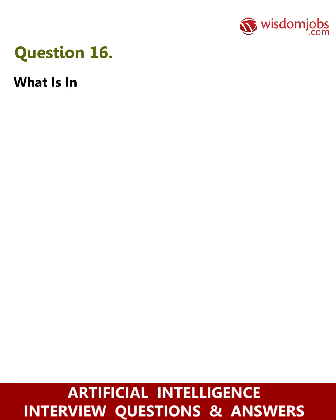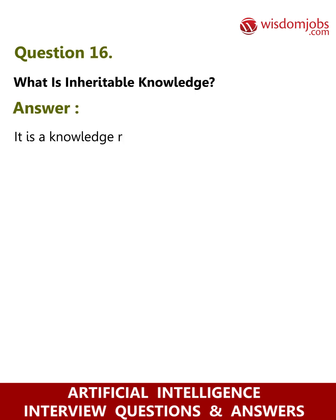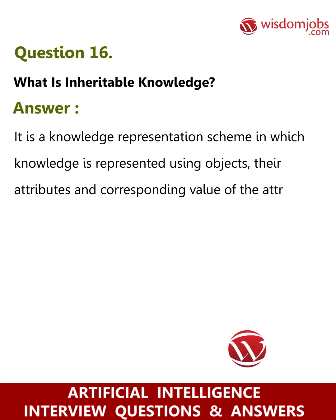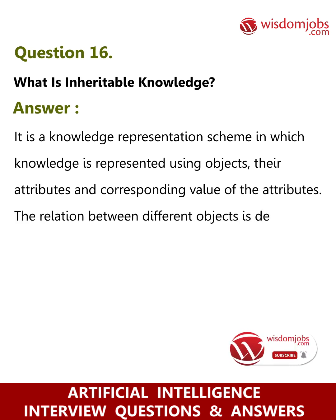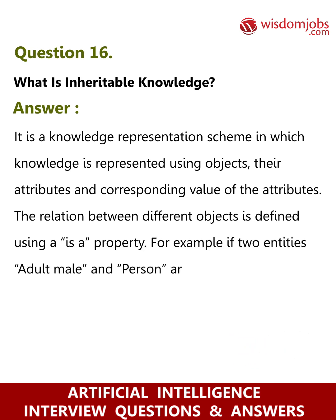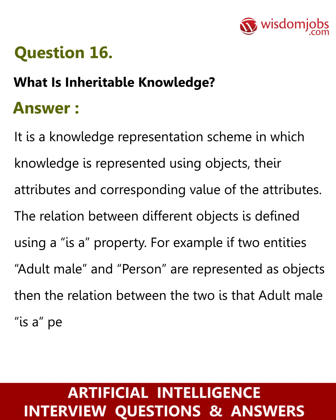Question 16: What is inheritable knowledge? Answer: It is a knowledge representation scheme in which knowledge is represented using objects, their attributes and corresponding value of the attributes. The relation between different objects is defined using an 'is a' property. For example, if two entities, adult male and person, are represented as objects, then the relation between the two is that adult male is a person.